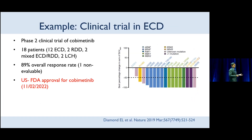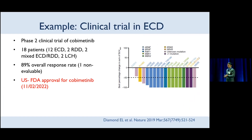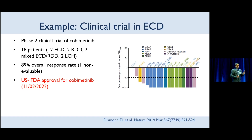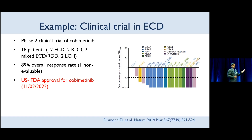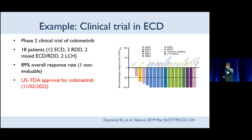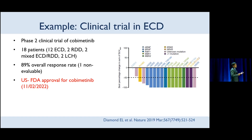A classic example of a clinical trial is the one led by Dr. Diamond on cobimetinib most recently. This was a phase two trial — an early phase, single arm study — and it shows the power even in a rare disease: it got cobimetinib approved for histiocytic neoplasms. The curve on the graph on the right shows the reduction in how bright the tumor looks on the PET scan compared to baseline. Almost all patients had a reduction in activity or size of the tumor — pretty much everybody had a response, close to 90%. It shows the power of research.